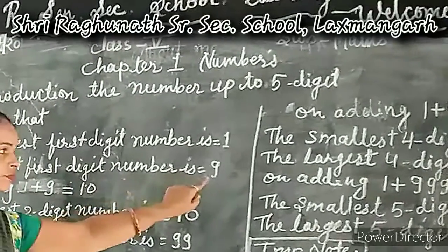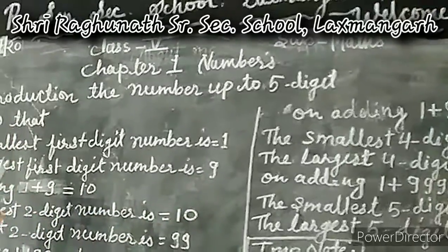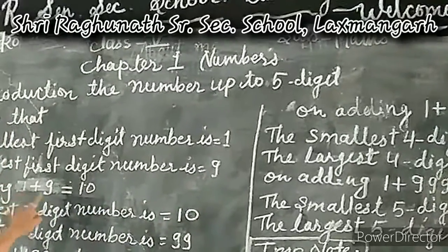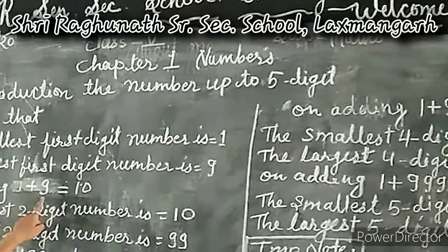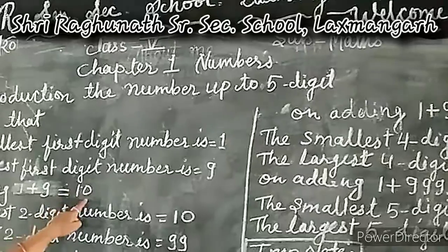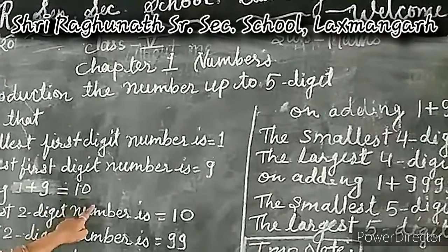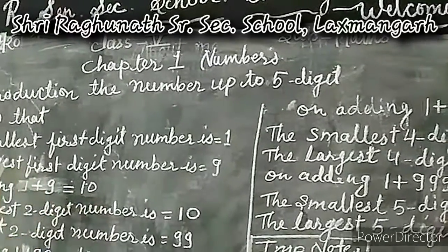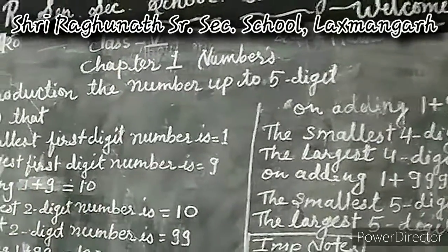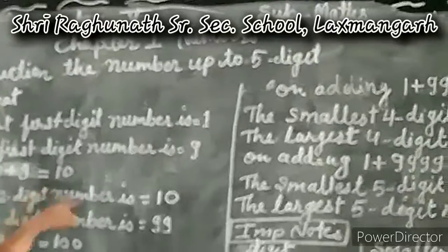In this way, if we add one to nine, we will get ten. Ten is the smallest two-digit number.